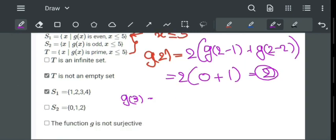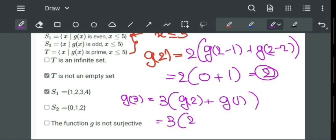g of 3 equal to 3 times g of 3 minus 1 that is g of 2, plus g of 3 minus 2 that is g of 1, which is equal to 3 times 2 plus 0. It implies that g of 3 equal to 6.